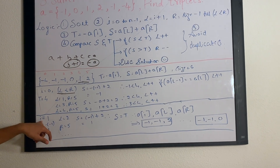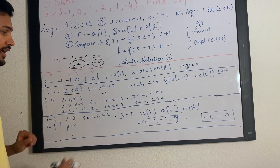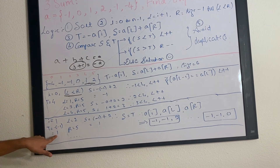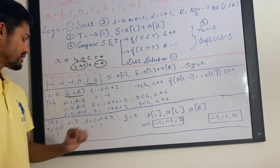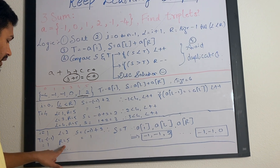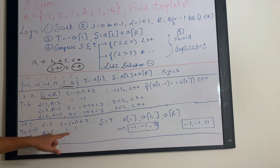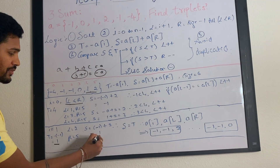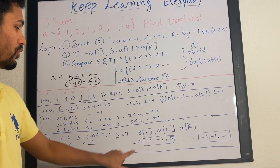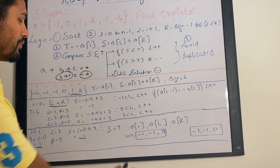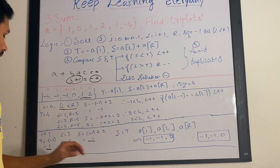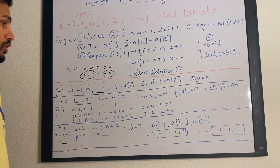We set I equal to 1 and go through the same sequence again. When I equals 1, target is negative of A[1] which is -(-1) = 1. When L is 2 and R is 5, sum is -1 + 2 = 1. Our target is 1 and sum is 1, so we found a solution. The triplet is A[I], A[L], A[R] which is -1, -1, and 2 — our first triplet whose sum equals zero.